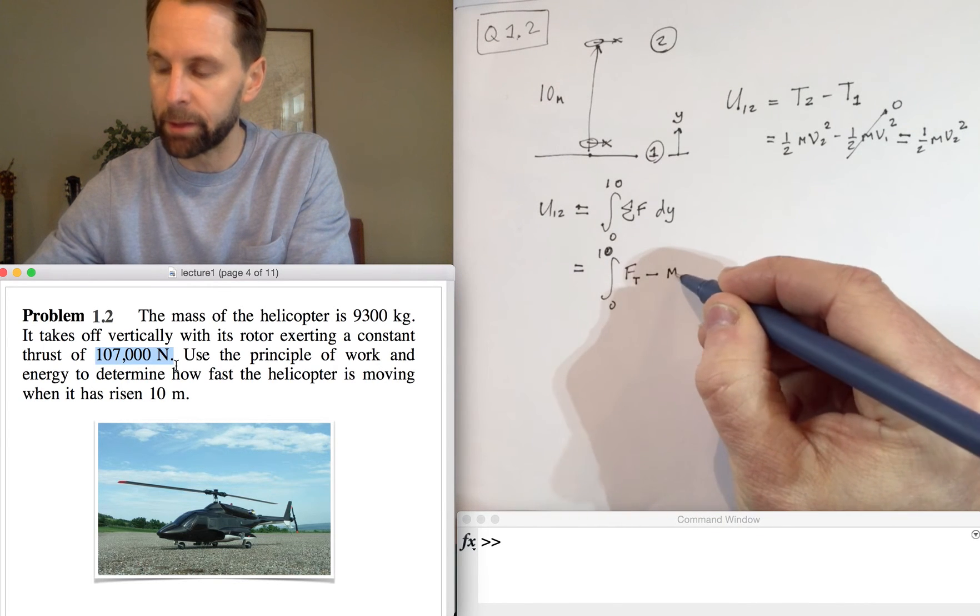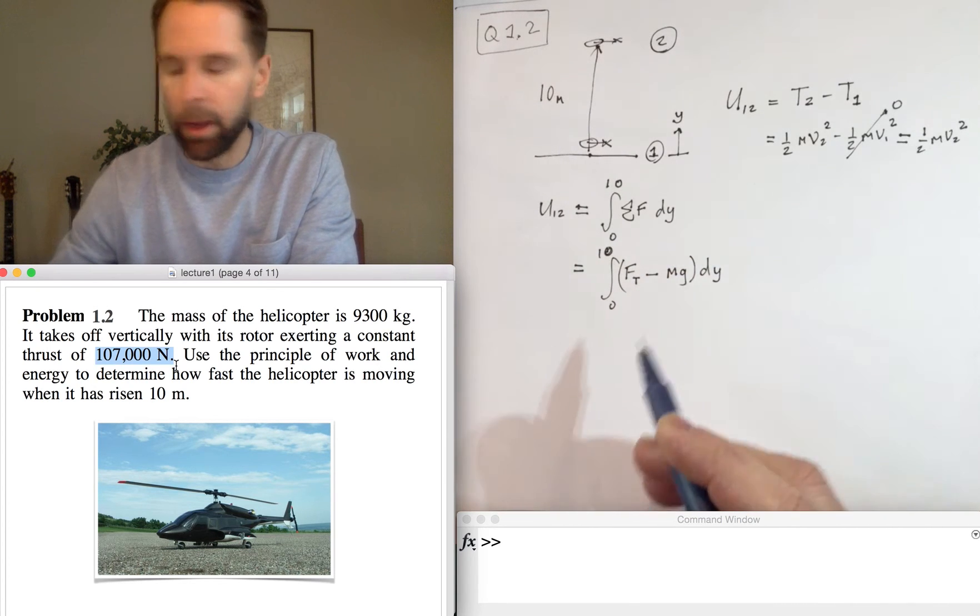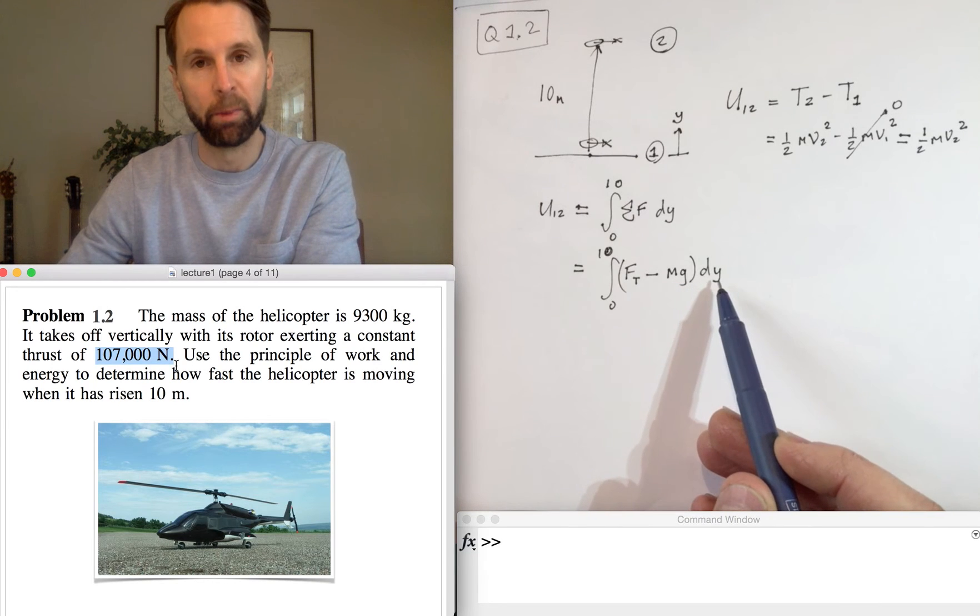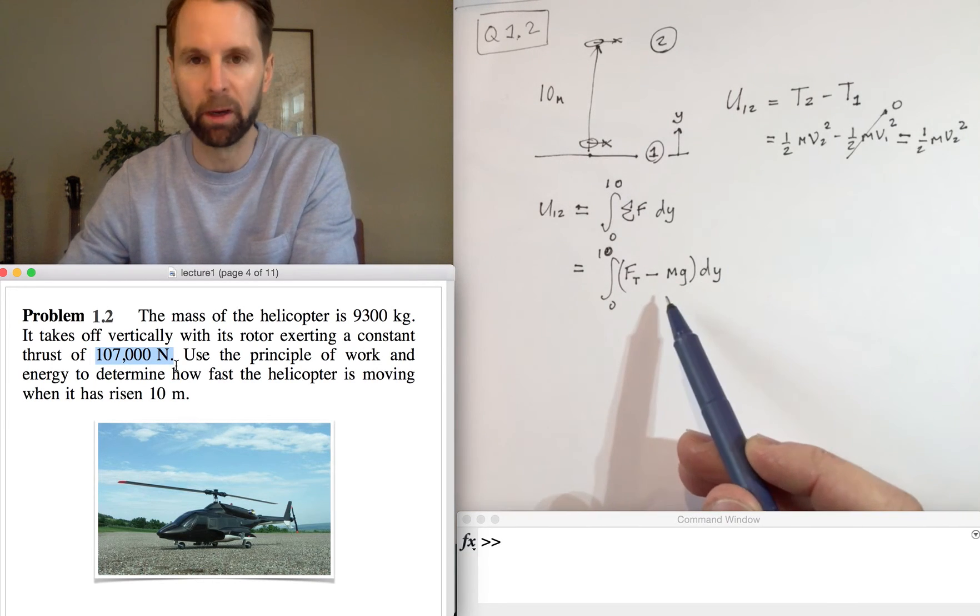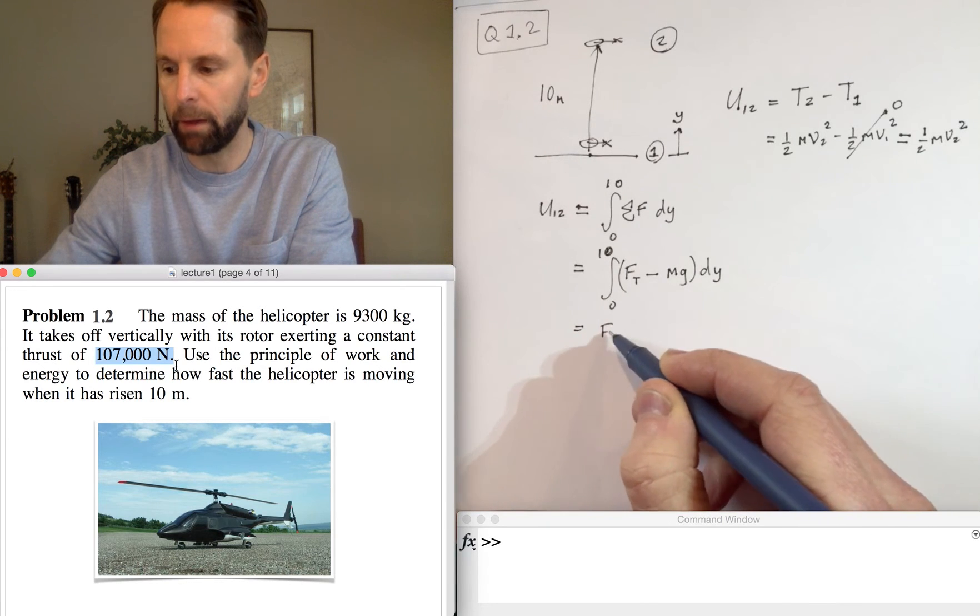And then you've got a negative force which is the force of gravity, so that's just mg. What you see straight away is that this is not dependent on the position, so it's a constant force, both terms are.